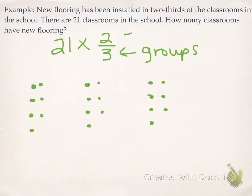Well, the numerator, which is a 2, tells me how many groups I'm allowed to keep. I'm allowed to keep 2 of them. So what I do is I circle my 2 groups, and my answer is simply the number of dots that is in the circled region.